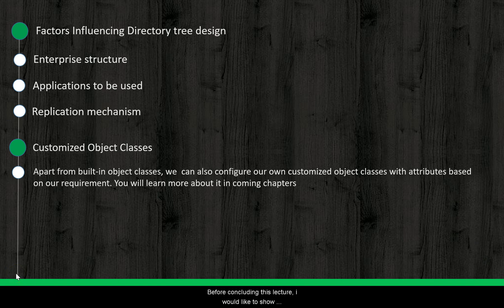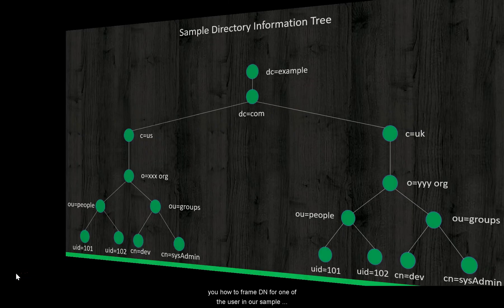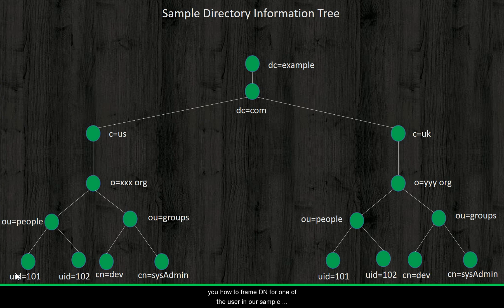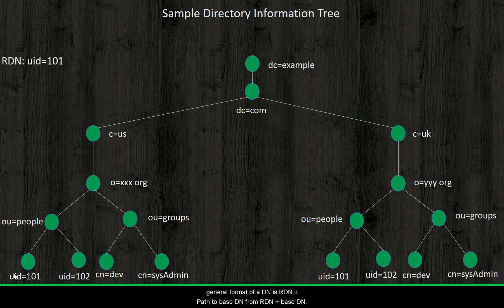Before concluding this lecture, I would like to show you how to frame a DN for one of the users in our sample directory structure. The general structure of a DN is: RDN, plus the path to base DN from RDN, plus the base DN.